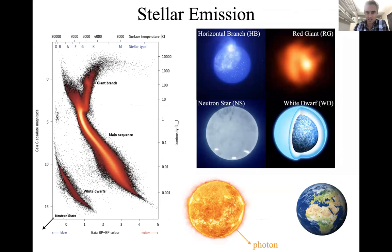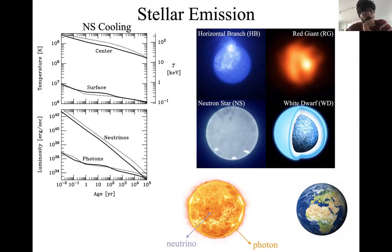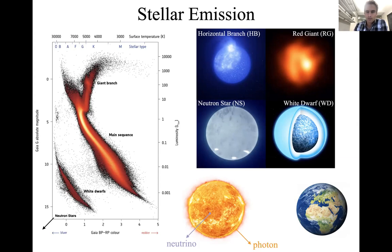As a quick primer on how stars emit particles: the sun emits photons but inefficiently — only from the surface, which is cool. The sun also emits neutrinos from its core both from fusion and thermal bremsstrahlung. For the sun thermal bremsstrahlung is not important, but it is for more extreme stars like neutron stars and white dwarfs. In the first hundred thousand years of a neutron star's life, it cools mainly through neutrinos despite their tiny coupling, because of the long mean free path.